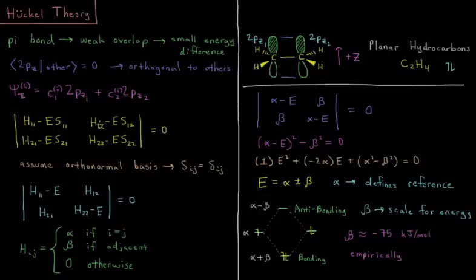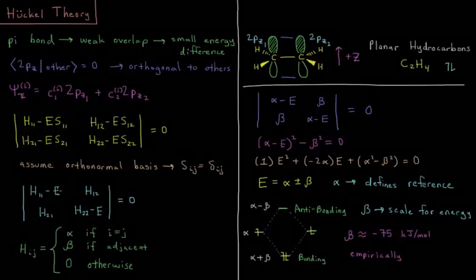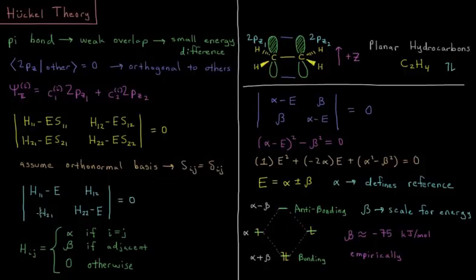We're going to get H12 is also equal to H21. So we have H11 minus E, H12, H21, H22 minus E. The determinant of this is going to equal 0.